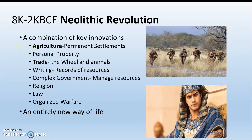Agriculture is just farming. So for the first time, human beings are growing their own food. They've domesticated some animals and are growing animals for food. Agriculture is the major thing that brings us to the Neolithic Revolution, and it is going to have a lot of consequences. One of the big consequences is permanent settlements — the very first cities, towns, and villages are going to be built because people are staying in one place for the first time. As a hunter-gatherer, you're moving around all the time, but if you're going to stay in one place to farm, it makes sense to build a permanent house.